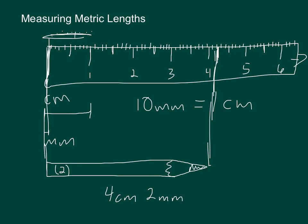Now if someone asks, what is that just in terms of millimeters? Well, each centimeter is 10 millimeters. So four centimeters would be 40 millimeters and then you have two more, so you'd have 42 millimeters.